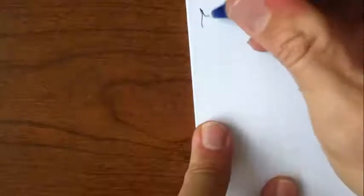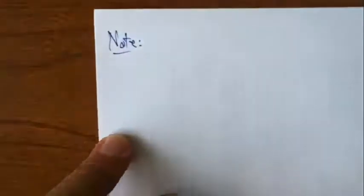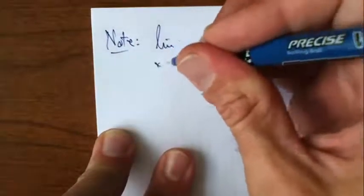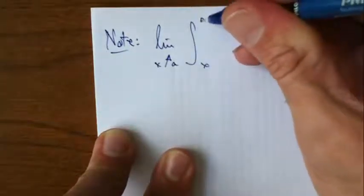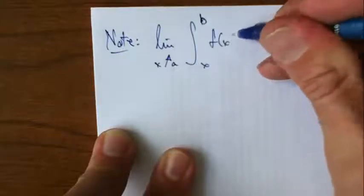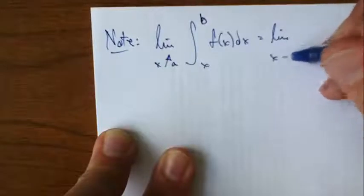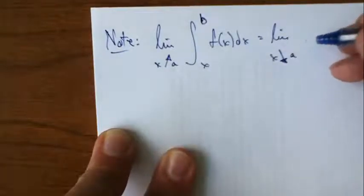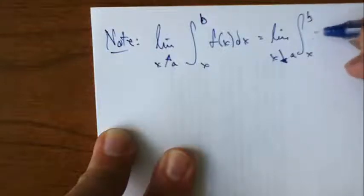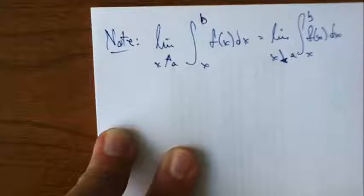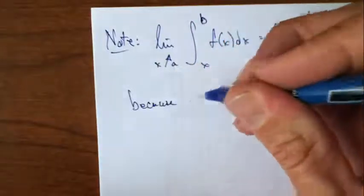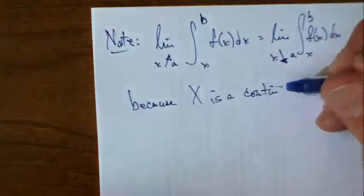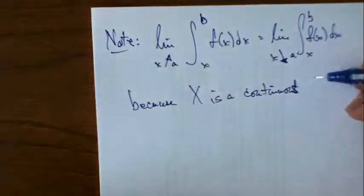Taking the integrals. Note that the limit as x goes up to a, if I pick some point on the real line of the integral, this guy, is going to be the same as the limit as x goes down to a from the right. And the reason for that is because x is a continuous random variable.